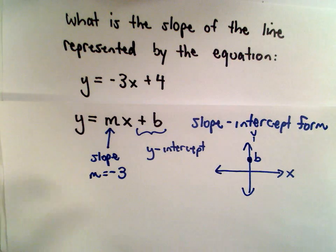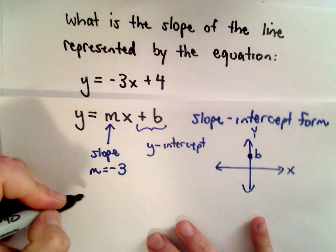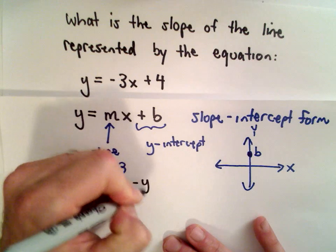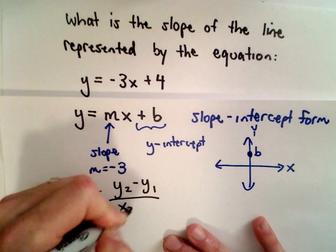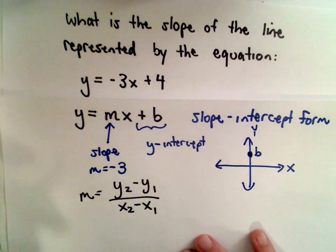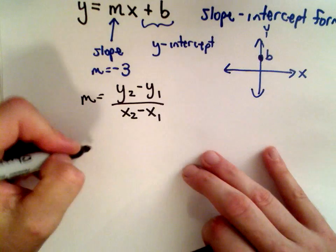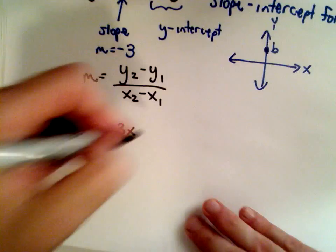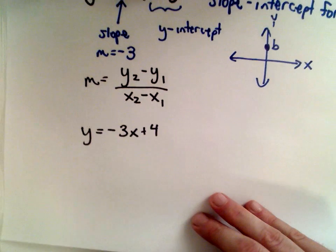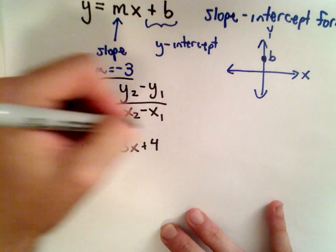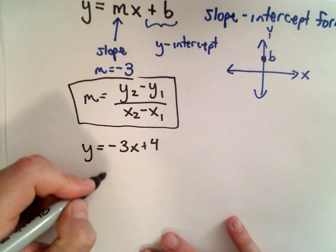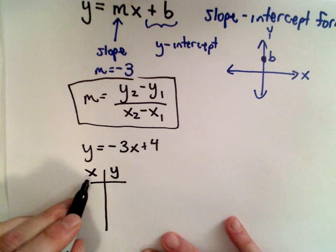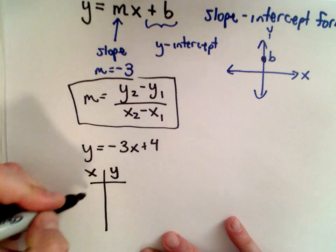Suppose you didn't remember this form. Well, the other way to do it is to use the slope formula, y2 minus y1 over x2 minus x1. Well, we don't have points just yet, but we can find some. So I'm going to make a little chart here. And I'm going to pick some values for x and I'm going to get some values for y.